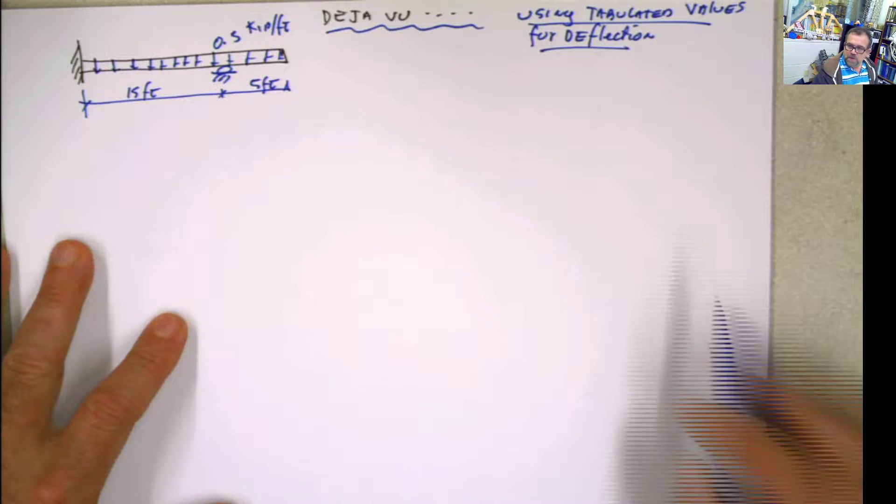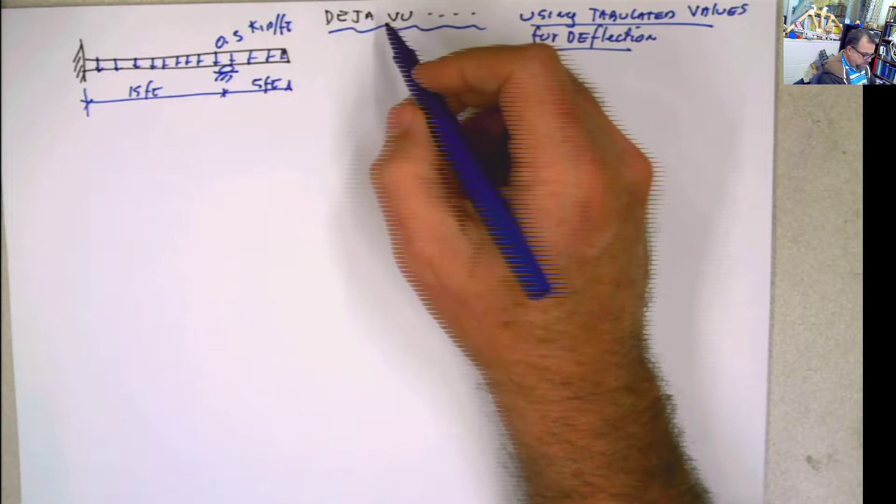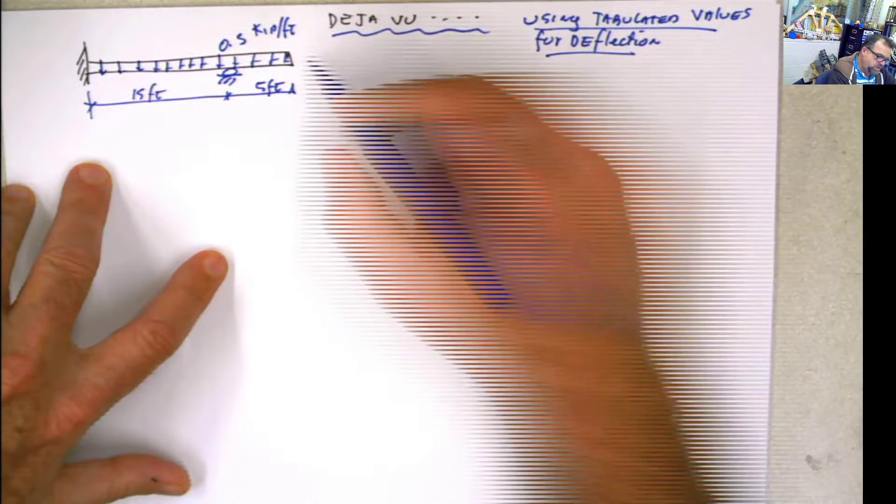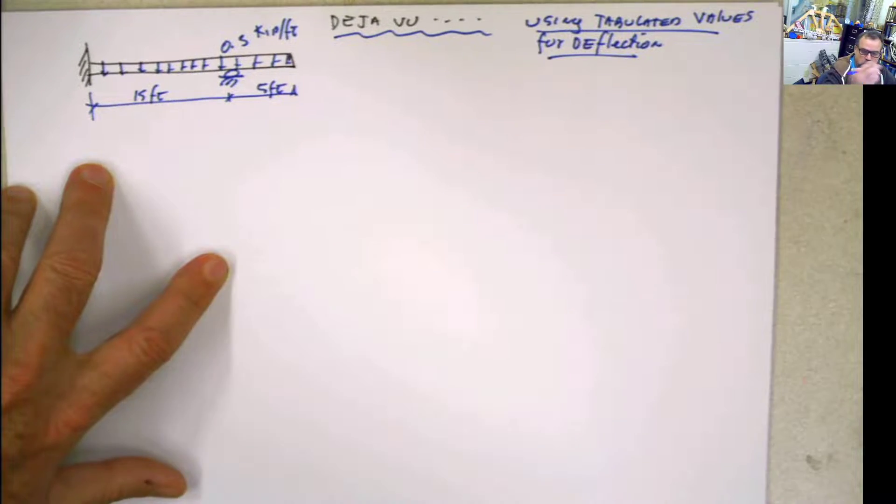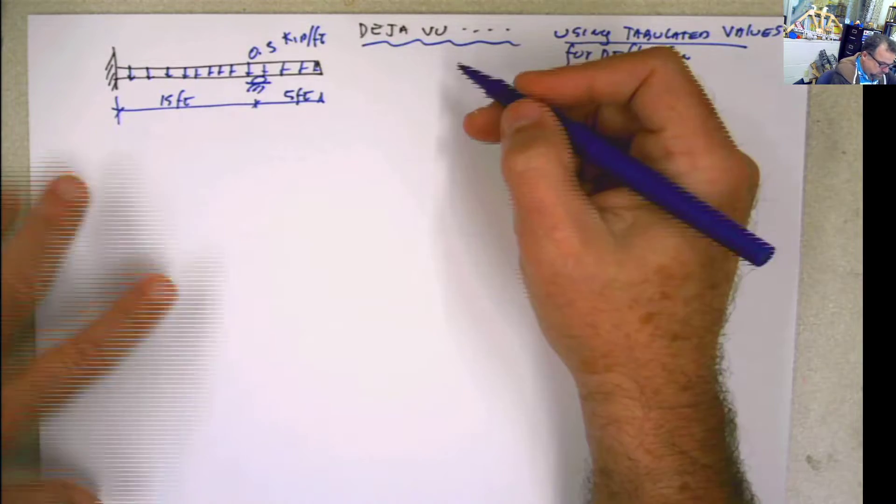Hi, again. This problem, I call it deja vu, because it's the same problem that we solved before. But this time, we're going to be using tables for deflection or rotation. We're going to use it for deflection.